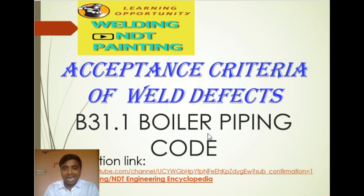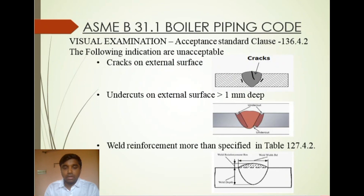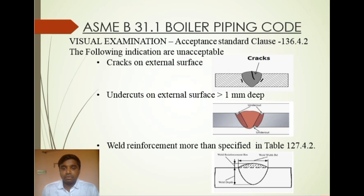This is the power piping code. We need to know the acceptance criteria for all different types of defects and what acceptance limits apply. The clause number for visual examination acceptance standard is 136.4.2 of ASME B31.1. The following indications are unacceptable, and each defect has a little sketch so you can easily understand.